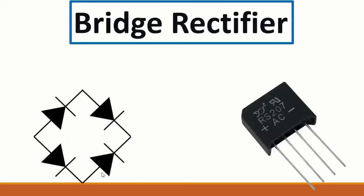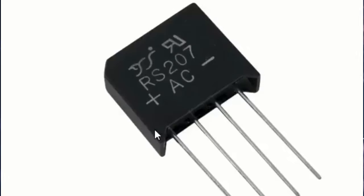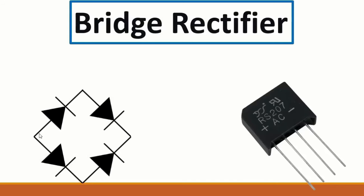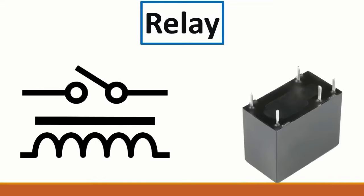Then we have the bridge rectifier. It can consist of four diodes, one diode, or two diodes. It has four terminals: the positive terminal, the negative terminal, and two AC terminals. The positive terminal connects to the anode of two diodes; the negative terminal connects to the two cathodes. The AC terminals are the input.